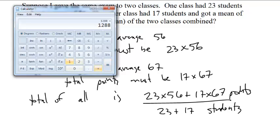I should be able to do that in my head. So we get 40 students, and we get 60.675, or 60.7.